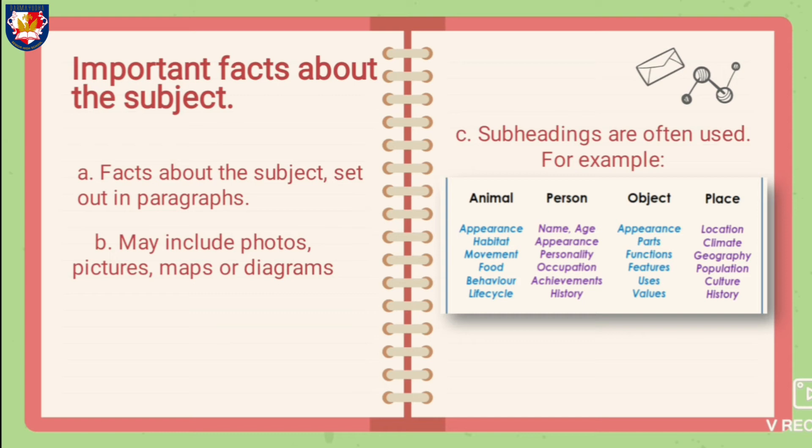Next, if you want to write about a person, make sure you write about their name, age, appearance, personality, occupation, achievements, and history.